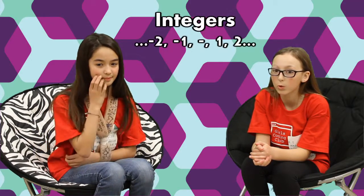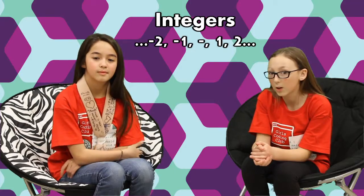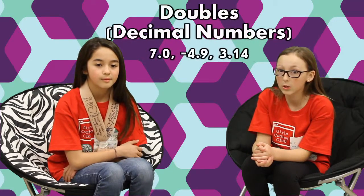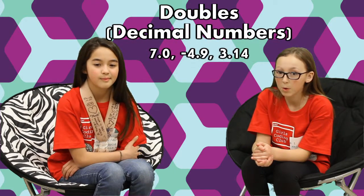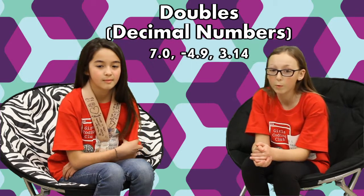Integers are positive or negative whole numbers like 9 or negative 4. Doubles include integers, but also decimal numbers like 3.14.